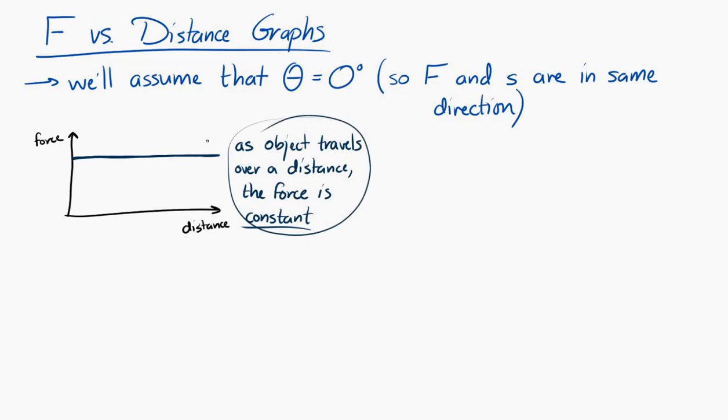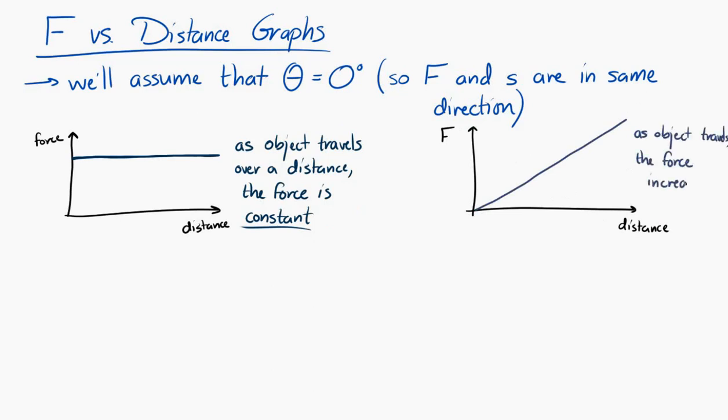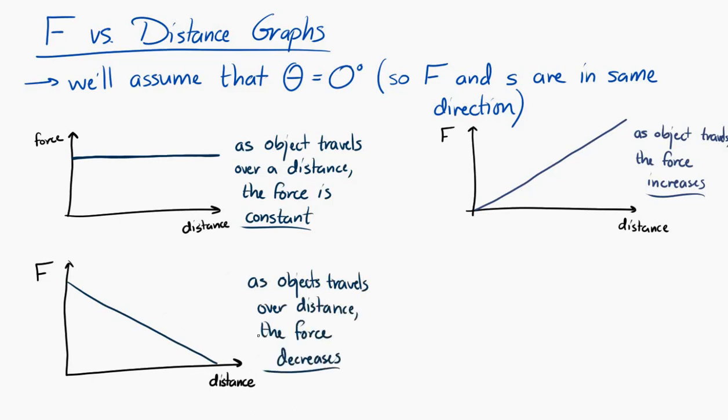Let's look at a slightly different one. Let's say we have this graph right here. Well, what this says is that as the object moves, you're applying more and more force. The force is increasing and increasing and increasing as it moves further and further. In this graph over here, it's saying that as the object moves, as the distance increases, the force decreases. So it's moving and moving and moving, and as it moves, the force that you're applying decreases.